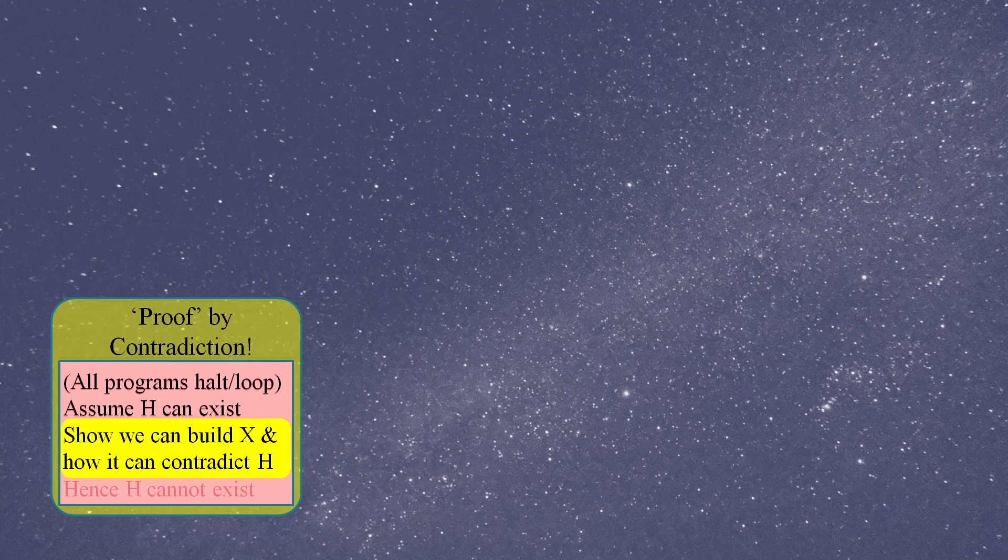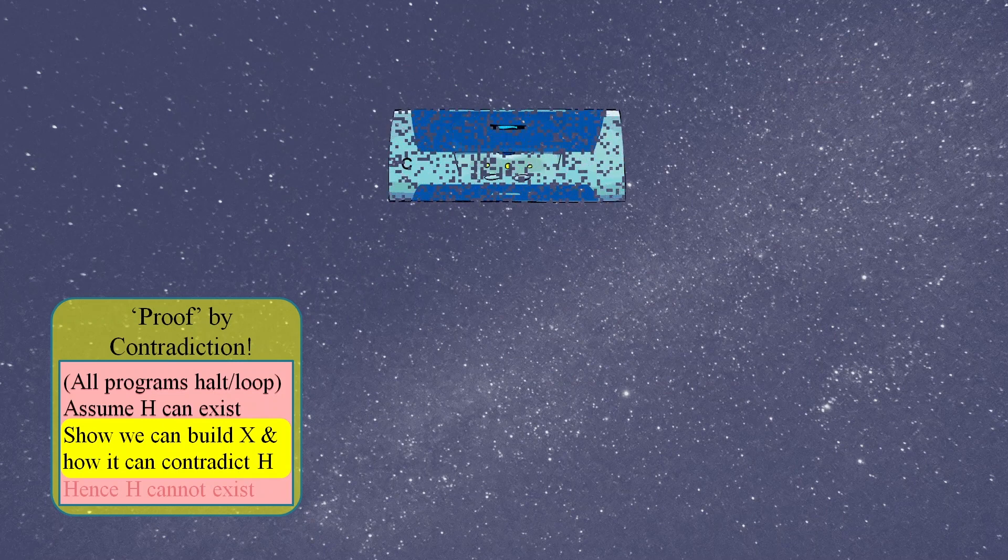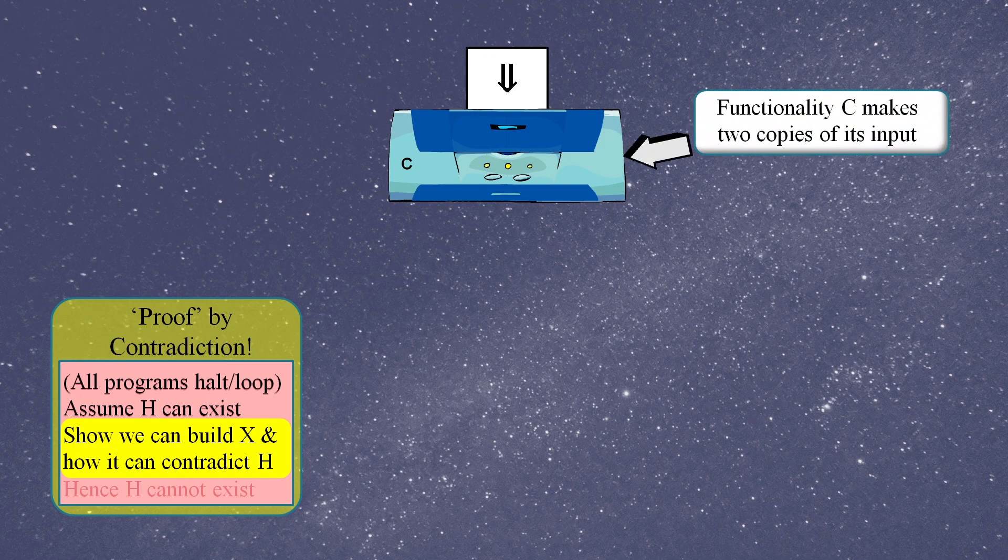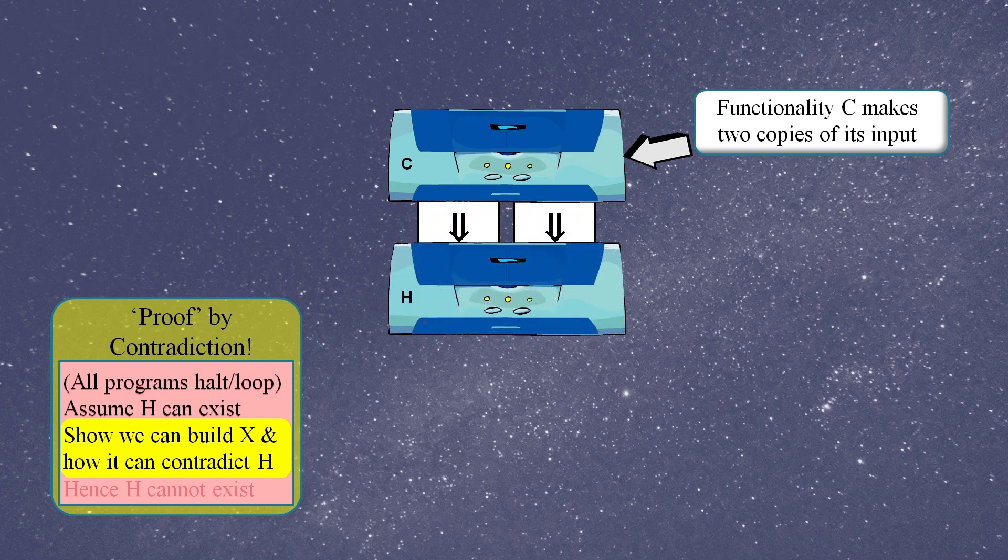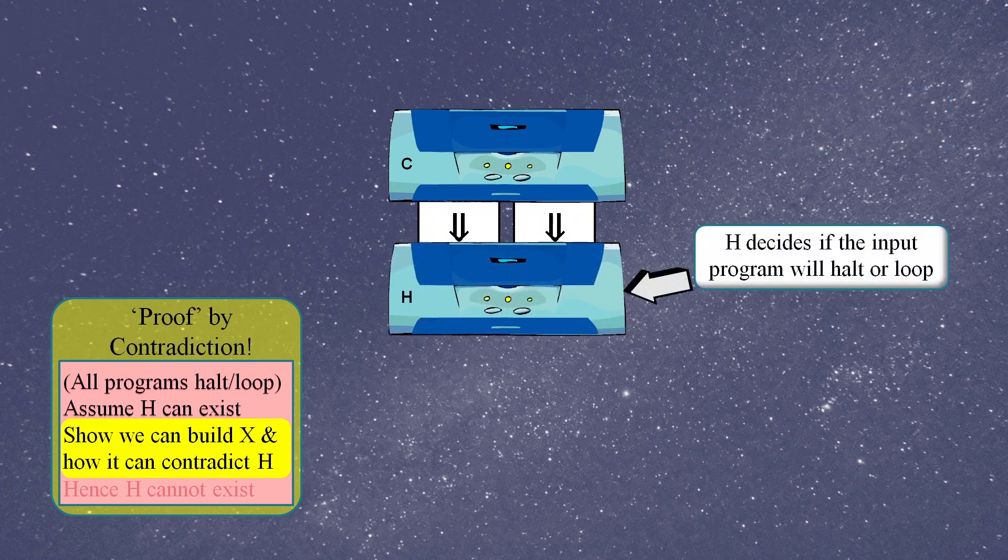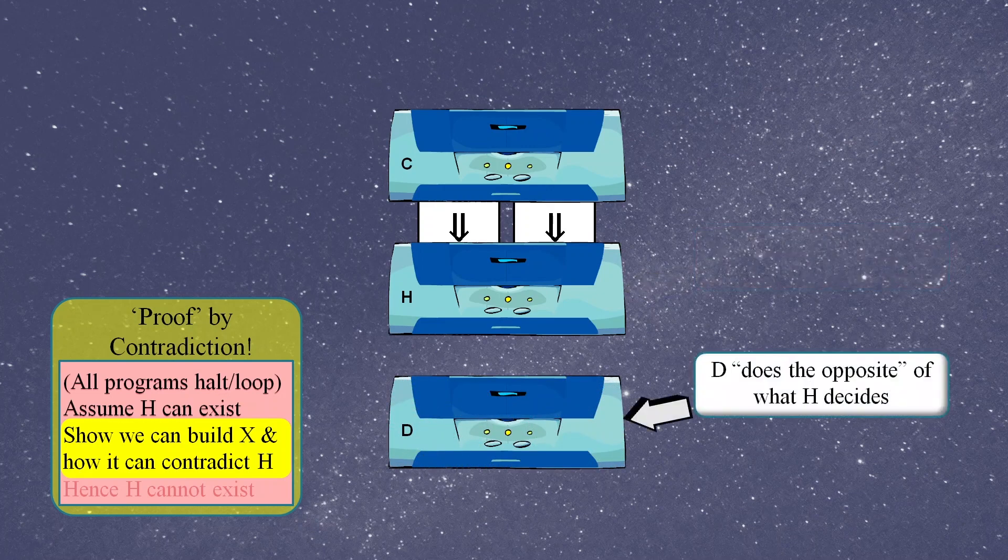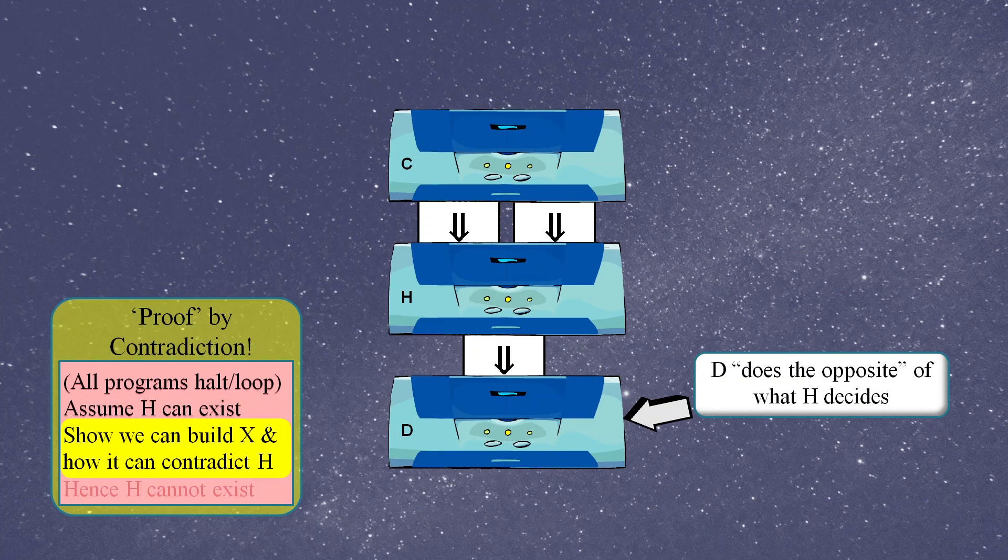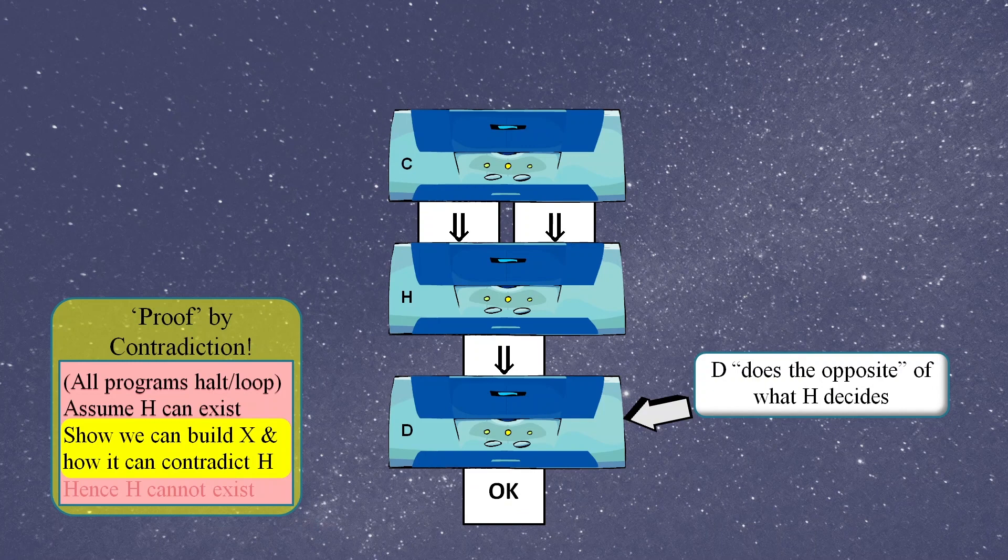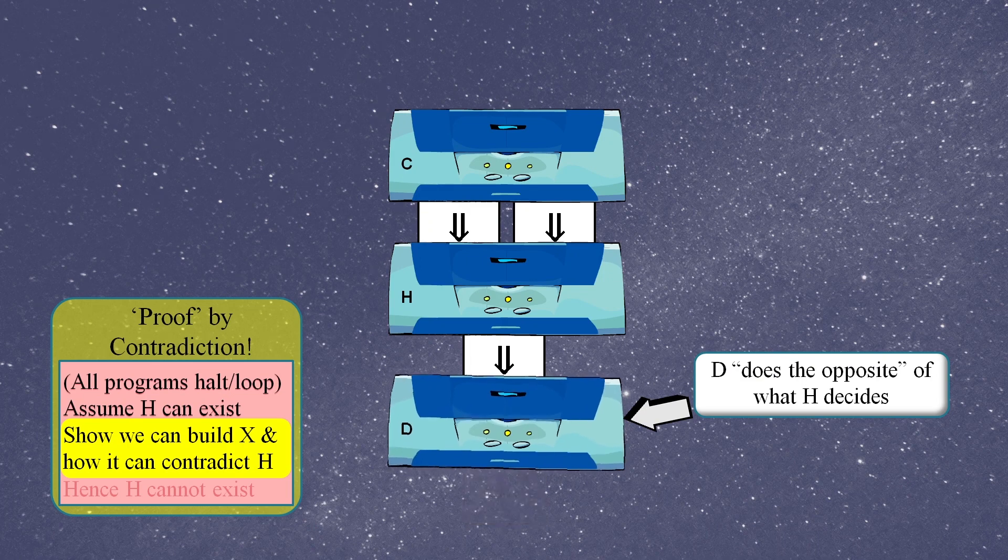The next stage of the proof is the clever bit where we show we can build a program called Program X that is able to contradict the output of Program H. We start with a piece of code called functionality C which simply makes two copies of its input. These two copies feed into functionality H which is our halt loop decider and the output of functionality H goes into functionality D which does the opposite of what its input says.